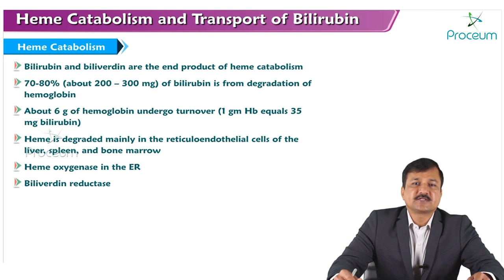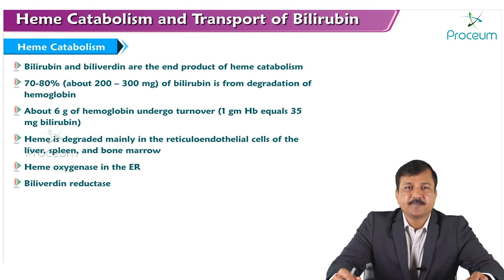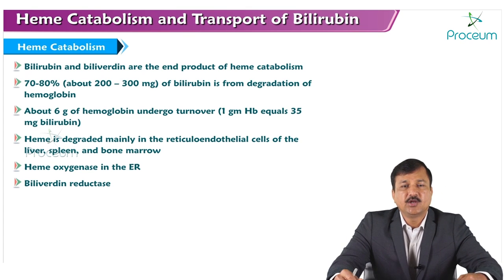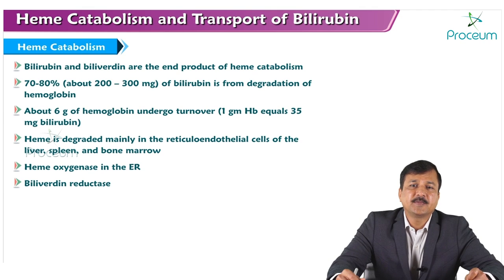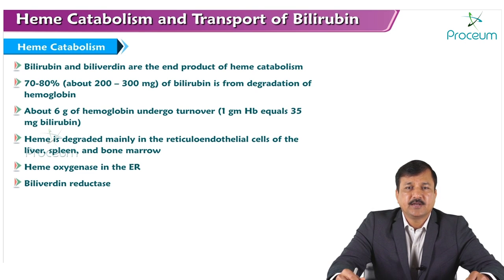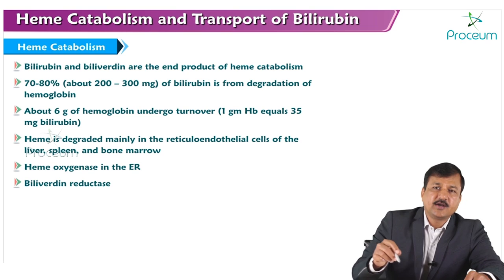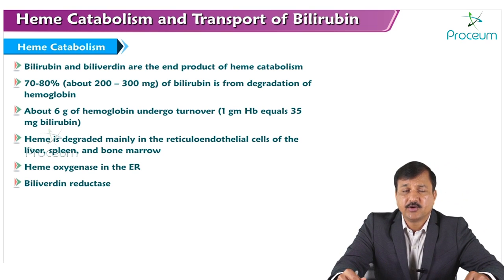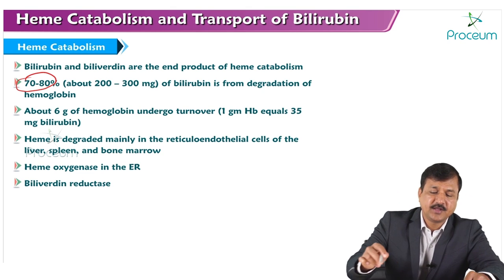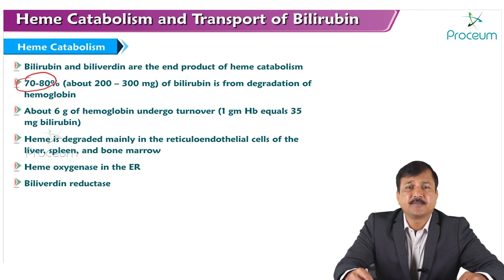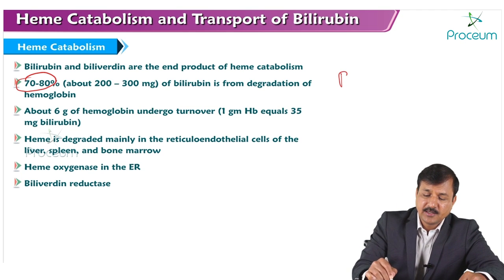Heme is catabolized initially into biliverdin and then into bilirubin. Bilirubin is the end product of heme. All heme-containing proteins, whenever they undergo turnover, will be converted into bilirubin, which is transported out of the liver into the intestine and exported out of our body. About 250 to 350 milligrams of bilirubin is produced in our body every day, and 70 to 80% of that comes from degradation of hemoglobin in red blood cells.